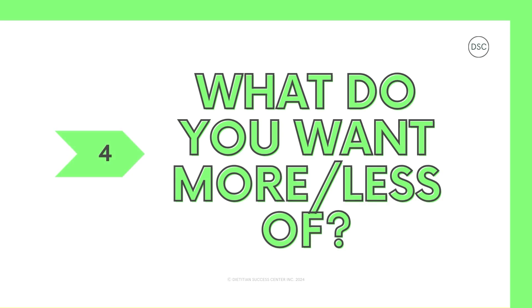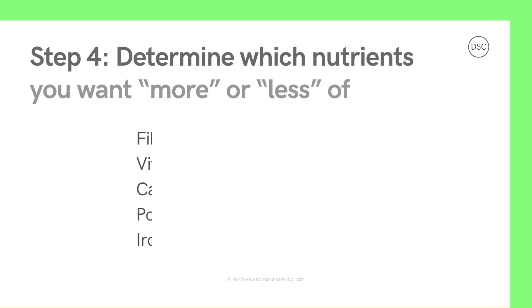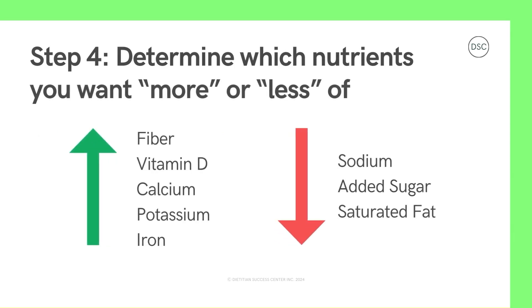This brings us to step four: what do you want more or less of? Though every person has unique nutrition goals, in general, unless you've been told otherwise by your healthcare provider, most people will want to choose foods that are higher in fiber, vitamin D, calcium, potassium, and iron. And in general, most people will want to choose foods that are lower in sodium, added sugars, and saturated fats.